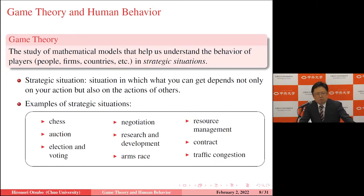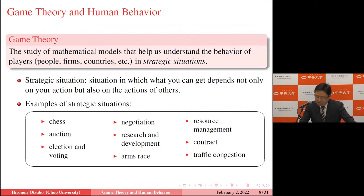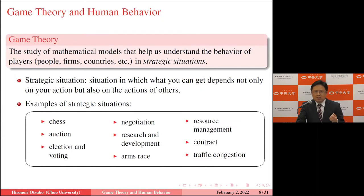Strategic situations are ubiquitous in our society. Many of you have experience playing chess or other board games — these are good examples because whether you win depends on what you do, but also on what your opponent does. Other examples include negotiation and resource management, auctions, research and development, contracts, arms races, traffic congestion, and elections. Our society is full of strategic interactions, and game theory gives us valuable insights into behavior in situations involving interdependence.